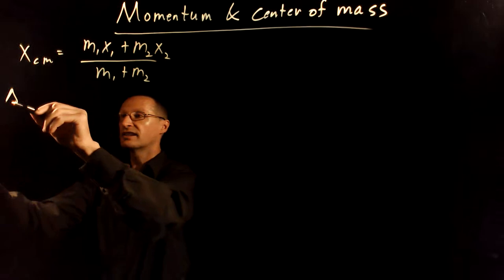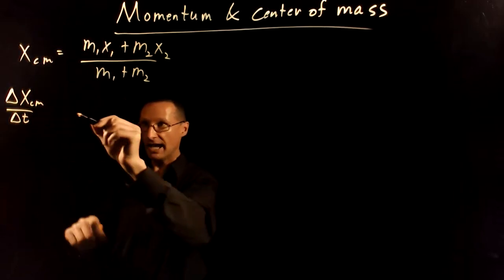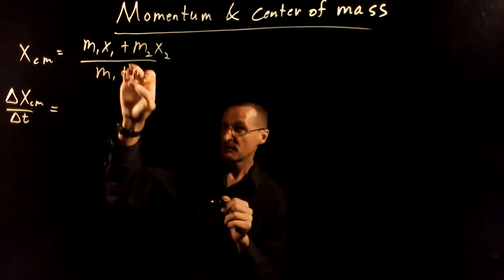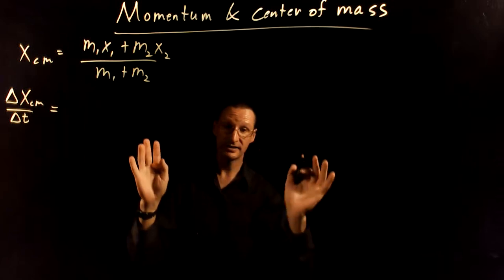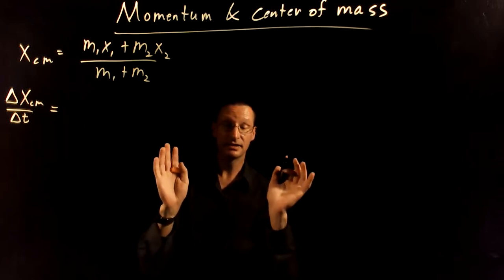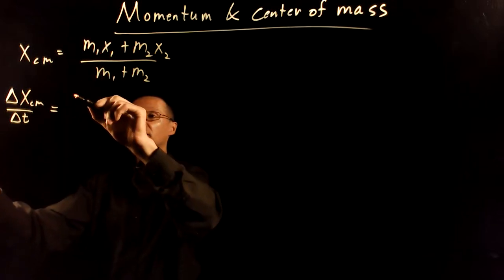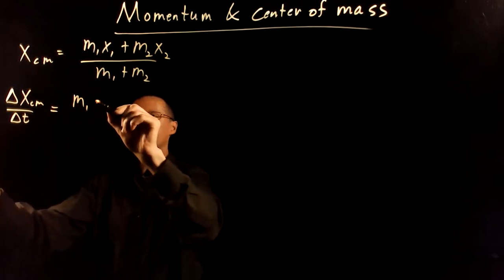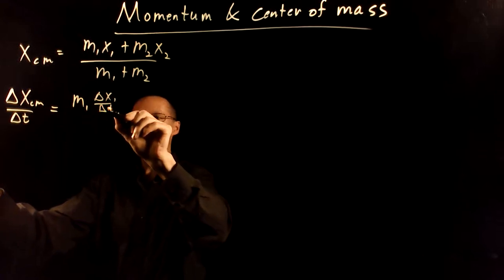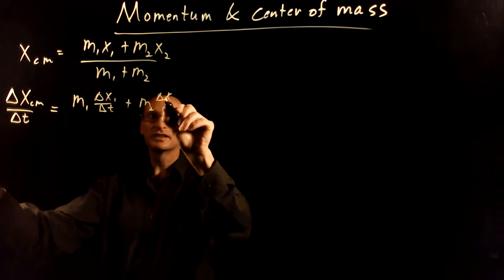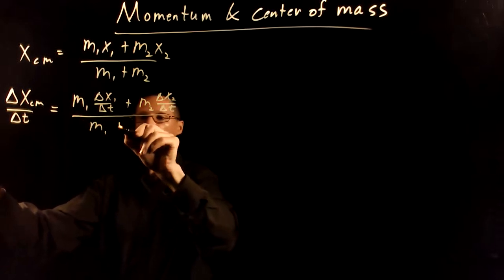So I want to look at the change in the center of mass position over time. And if you look at this equation up here, the masses are not going to change. You imagine you have a system and there's several particles in there, and those masses of those particles are not changing. What is changing is the positions of those particles. This is the change in the position of particle 1 over time, plus the change in position of particle 2 over time, over the total mass.